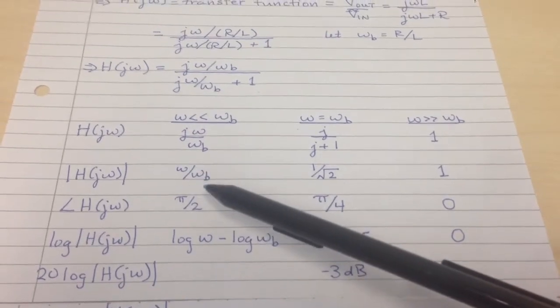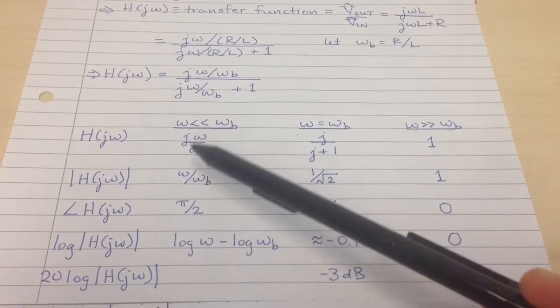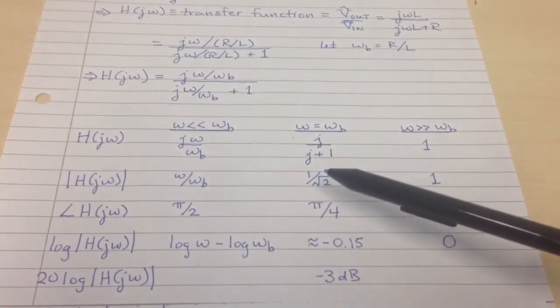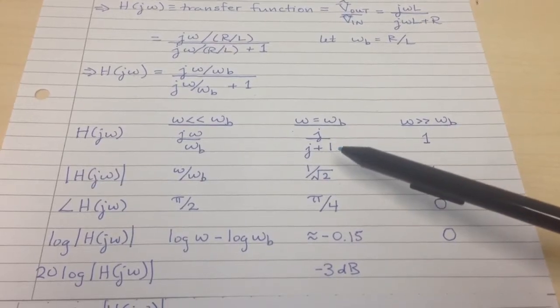When omega is small, it's telling us that it's going to be small, omega over omega B. We just take the magnitude by absolute valuing this. When omega is equal to omega B, we take the magnitude of this ratio.